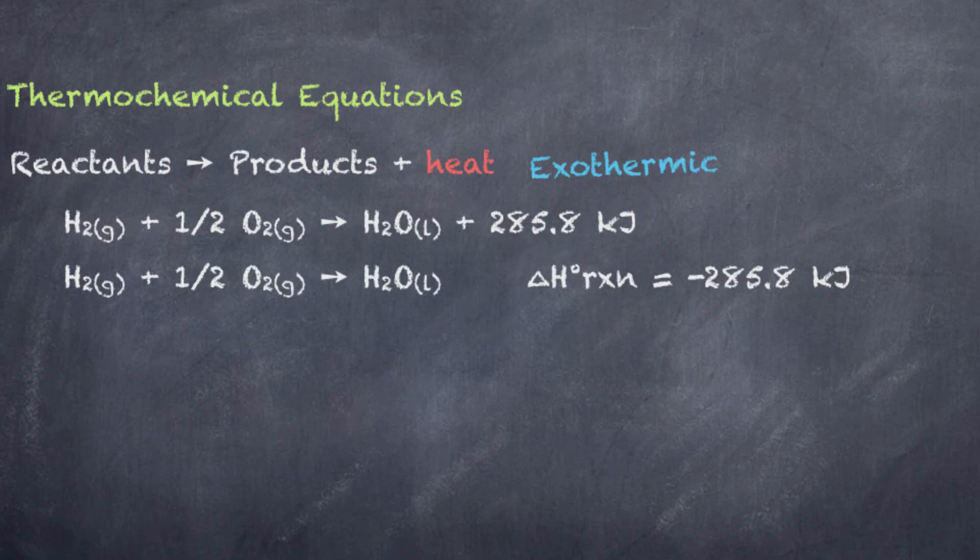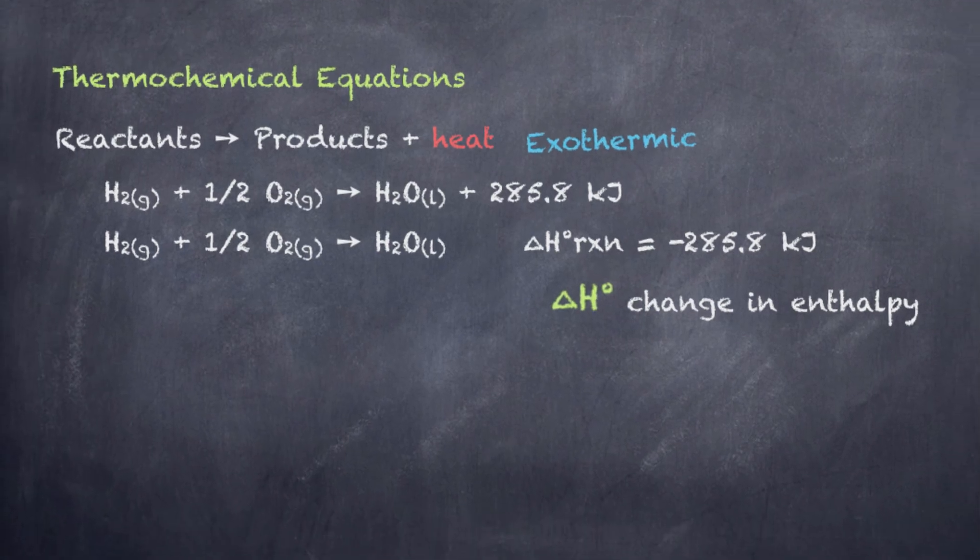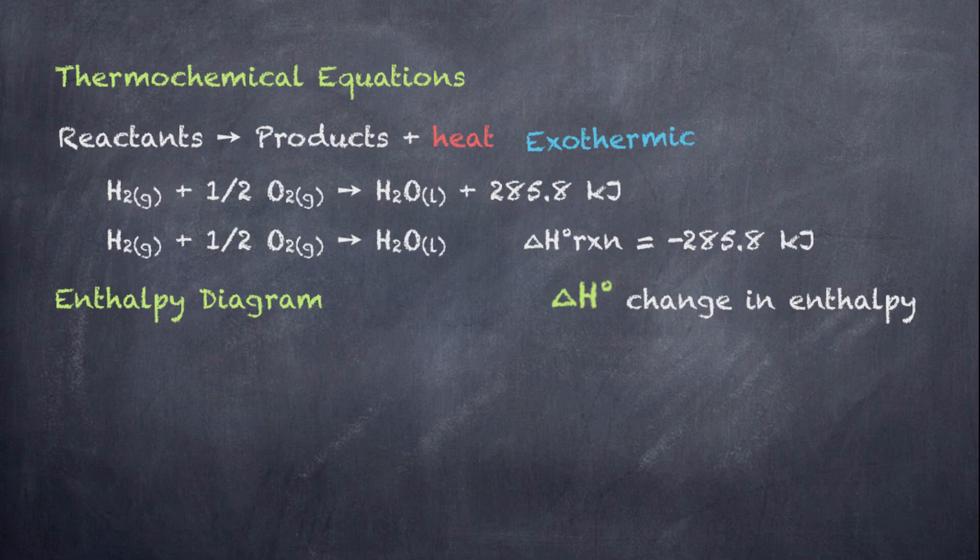And when we talk about delta H, we refer to that as the change in enthalpy, which is our sort of measuring of the difference in energies between the reactants and the products. It's just an absolute value, a difference between the amount of energy of the reactants and the amount of energy of the products. It's relative in terms of reactants and products.